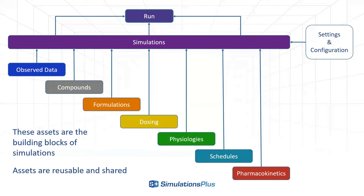In GPX, each of these components is represented logically as an individual building block, called an asset in GPX terminology. Assets include experimental data, compounds, formulations, doses, physiologies, schedules, and pharmacokinetic parameters. These assets are brought together to form one or more simulations, and numerous simulations can be created by combining different assets, with multiple simulations run simultaneously. Individual assets can be shared and reused between different simulations, simplifying the model building process.